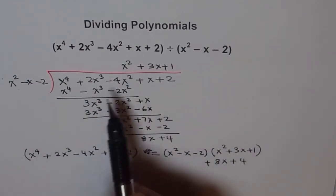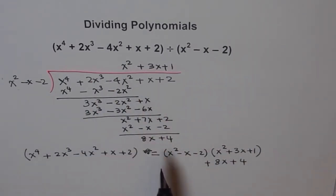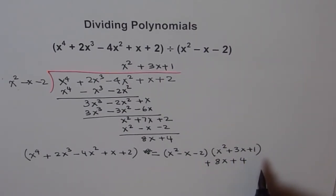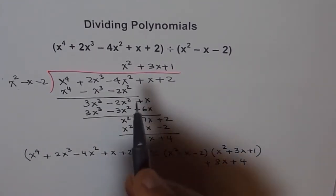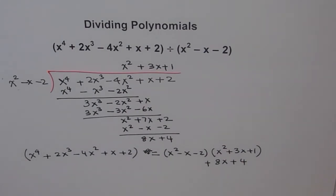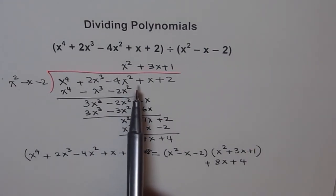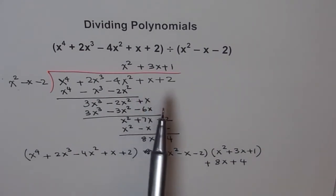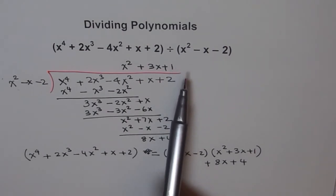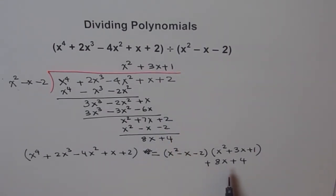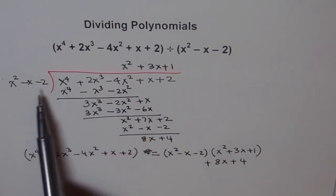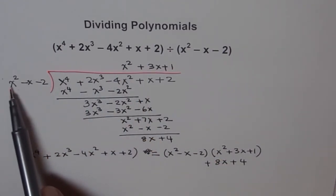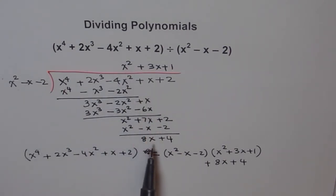So when you divide this by this, you get this — or you can write: f(x) equals divisor times quotient plus remainder. Now, the problem for you is to do this division without using the long division method. Can you use synthetic division to do this? No, you can't — synthetic division can only be used if we are dividing by linear factors, not quadratic. The quotient was 2 degrees less (4 minus 2), and the remainder was 1 degree lesser than the divisor.